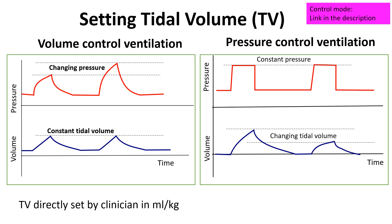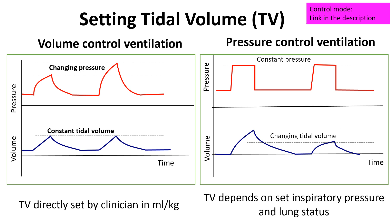In contrast, pressure-controlled ventilation allows the clinician to set the inspiratory pressure, and the ventilator delivers breaths at that pressure. The resulting tidal volume will depend on the patient's lung compliance and airway resistance, ensuring consistent inspiratory pressure but potentially varying tidal volumes with each breath.